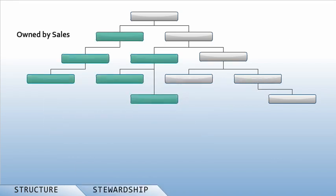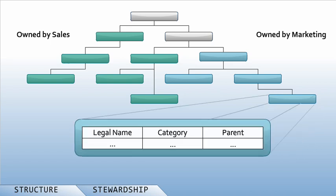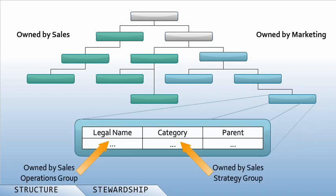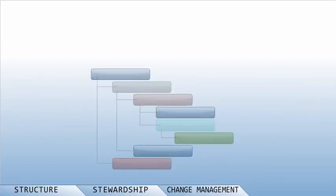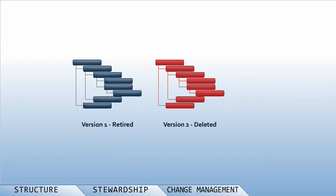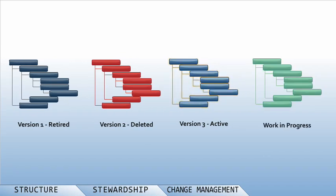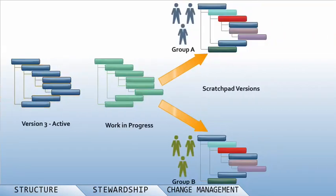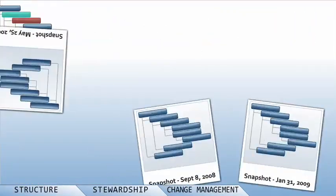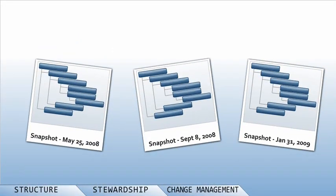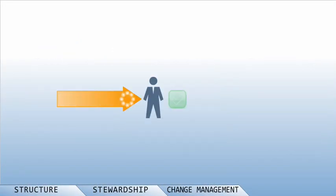The second component is assignment of stewardship, which in itself could be complex. The third component involves change management. Different requirements require different change management capabilities, such as active versioning of hierarchies, creating archive versions, or the standard practice of effective dating or slowly changing hierarchies. The fourth component is equally critical: the implementation of the workflow approval process.